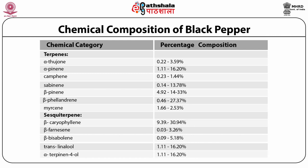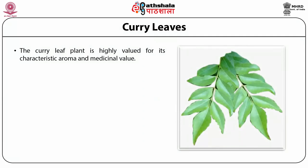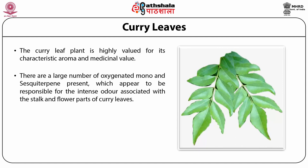The curry leaf plant is highly valued for its characteristic aroma and medicinal value. There are a large number of oxygenated mono- and sesquiterpenes present. For example, cis-ocimene about 34.1%, beta-caryophyllene about 9.5%, alpha-pinene 19.1%, alpha-terpinene 6.7%, and beta-phellandrene, which appear to be responsible for the intense odor associated with the stalk and flower part of curry leaves. A number of leaf essential oil constituents and alkaloids have been extracted from this plant.